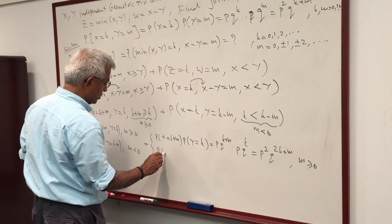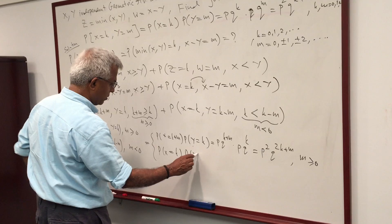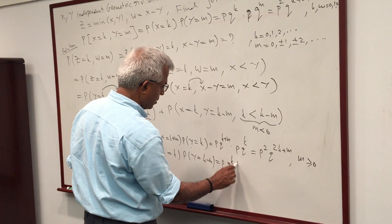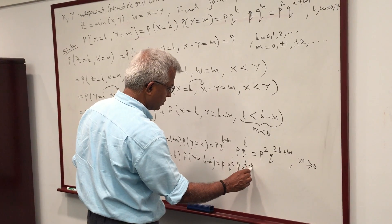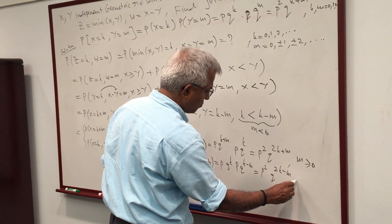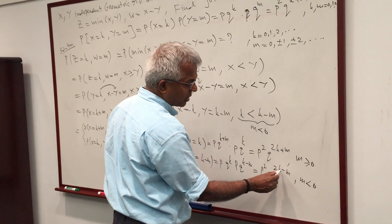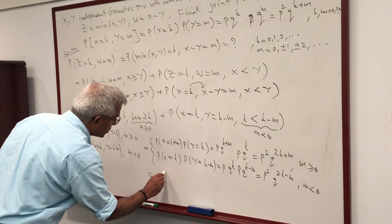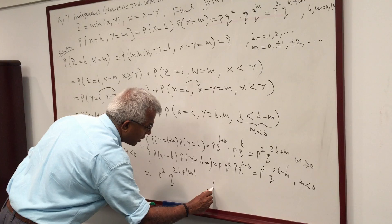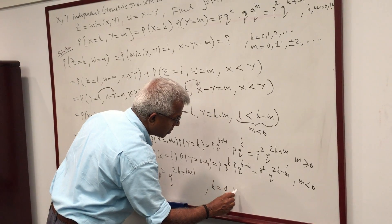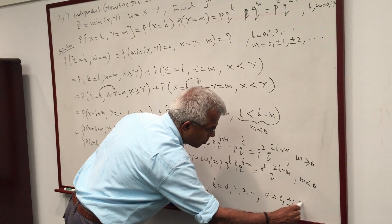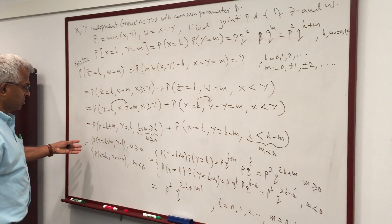When M is negative, only the second term contributes: P(X=K) · P(Y=K−M), which equals PQ^K · PQ^(K−M), giving P²Q^(2K−M) for M negative. Since when M is negative, −M is positive, we can write this uniformly as P²Q^(2K+|M|) for K = 0, 1, 2, ... and M = 0, ±1, ±2, .... This is the joint PMF.